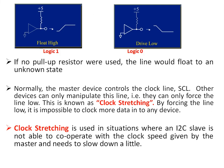Whenever the open collector switch is off, the line is driven high. Whenever the open collector switch is driven low, it sinks current and the output is low. If no pull-up resistor were used, the line would float to an unknown state — that's why the pull-up resistor is compulsory for an open collector bus.